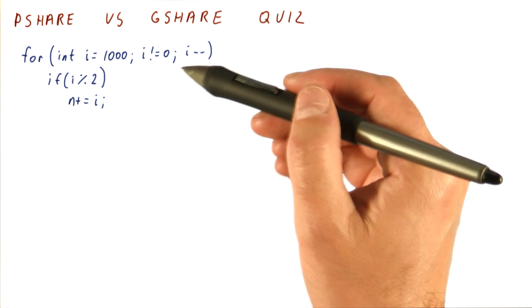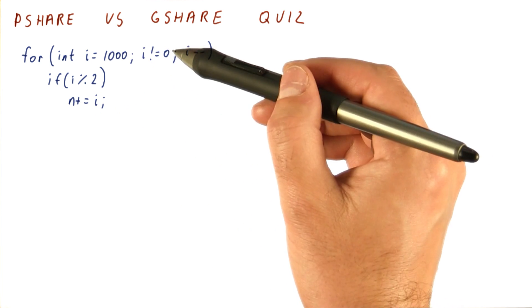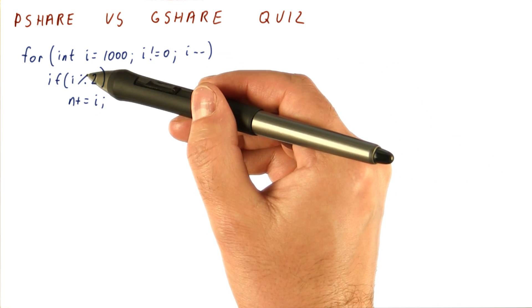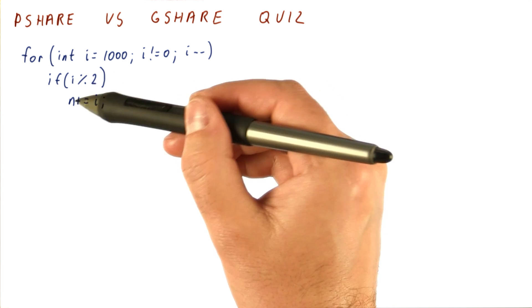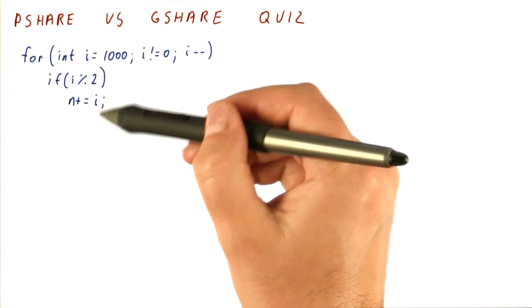Let's say that we have this fragment of C code where i goes from 1,000 down to 0, and for odd numbered i's, we are going to add the i to n. Otherwise, we just don't do it.